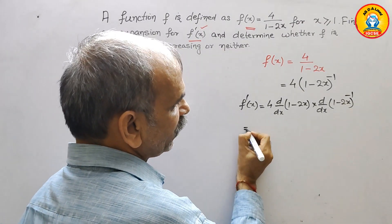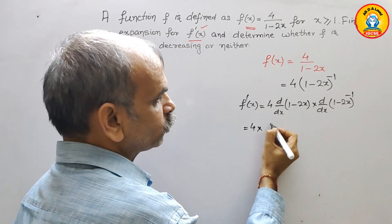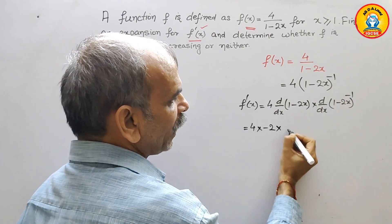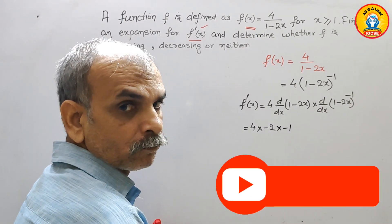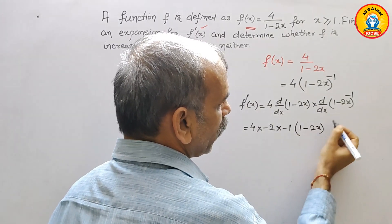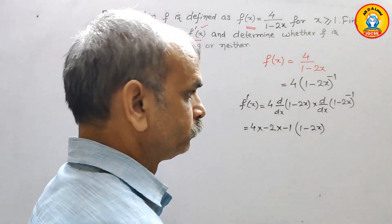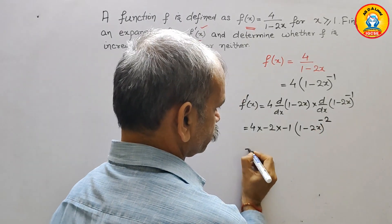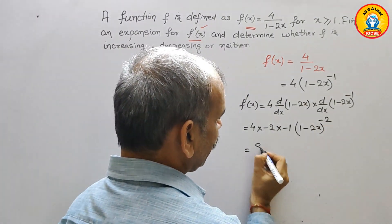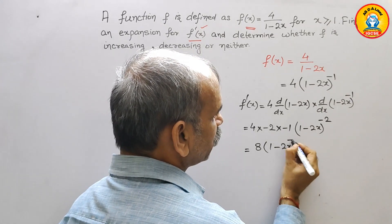If you differentiate this you will get 4 times minus 2. And here power is minus 1. Therefore here we will get (1 minus 2x) and power now will become minus 1 minus 1 is minus 2. So this is minus into minus is plus. So here we will get 8, (1 minus 2x) power minus 2.